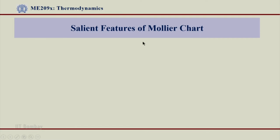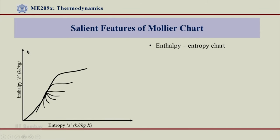Let us come to the Mollier chart and look at its salient features. As is known, it is an enthalpy-entropy chart — enthalpy on the y-axis, entropy on the x-axis. What you see here is the enthalpy-entropy diagram on which I have drawn several lines, and this is the specialty of the Mollier chart. These two extreme lines are the x lines. All these are basically x lines, and this is the saturated liquid line where x equals 0. The Mollier chart basically represents lines of dryness fraction, which we do not see on steam tables or even on phase diagrams. One can directly read the value of x from the Mollier chart, which is one of the highlights of this chart.